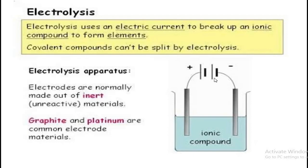The battery acts as an electron pump that draws electrons away from the anode. The electrodes are named anode and cathode. The anode is connected to the positive terminal of the battery and the cathode is connected to the negative terminal of the battery.